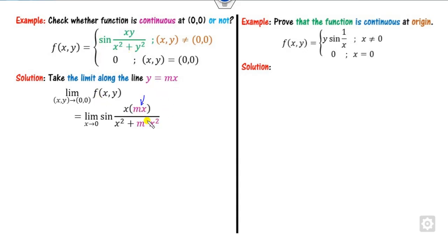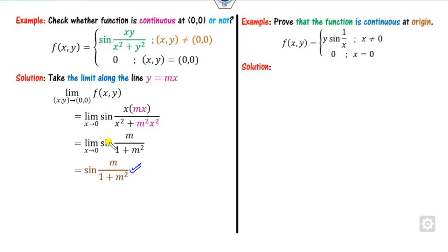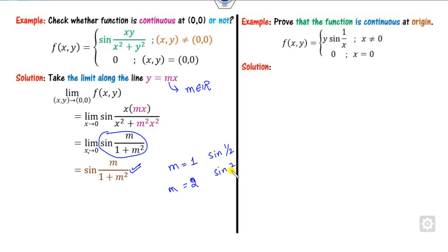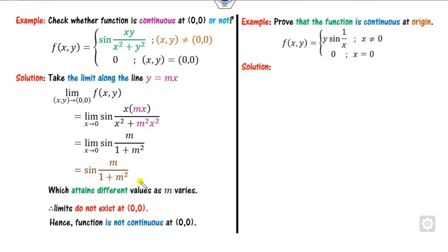After substituting y = mx, we check whether the limit exists. Taking x² as common, it cancels out, and the function becomes independent of x. When x→0, the result depends on m. For m=1 the answer is sin(1/2); for m=2 the answer is 2/5. Since different values of m give different answers, the limit does not exist. Once the limit does not exist, the function is not continuous.